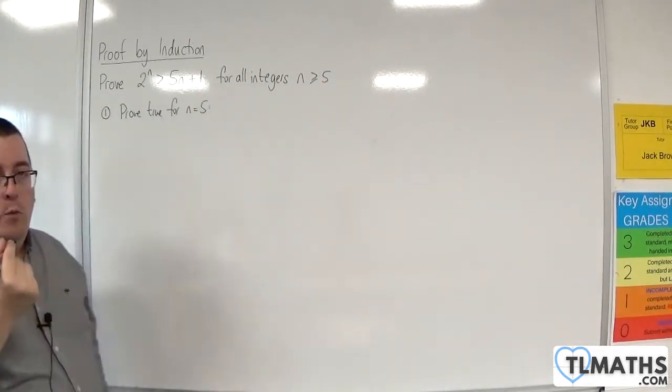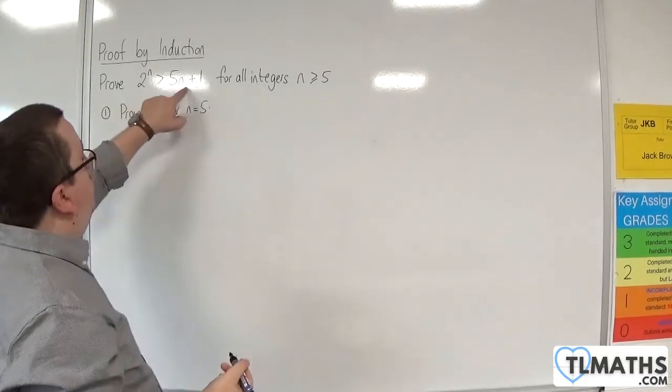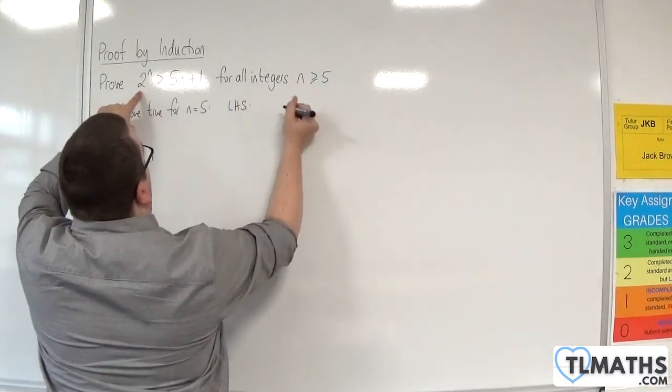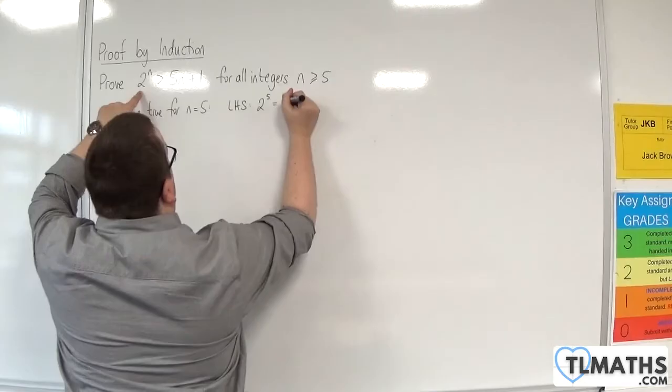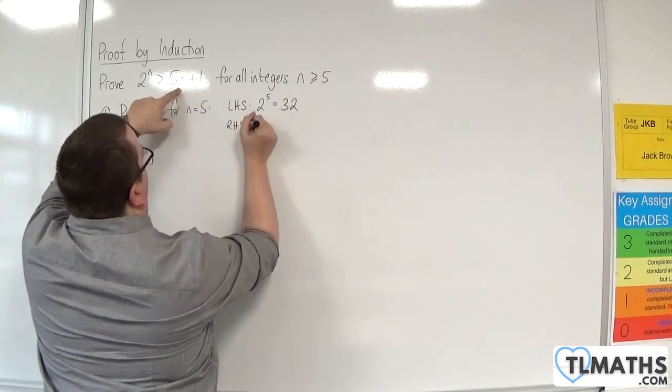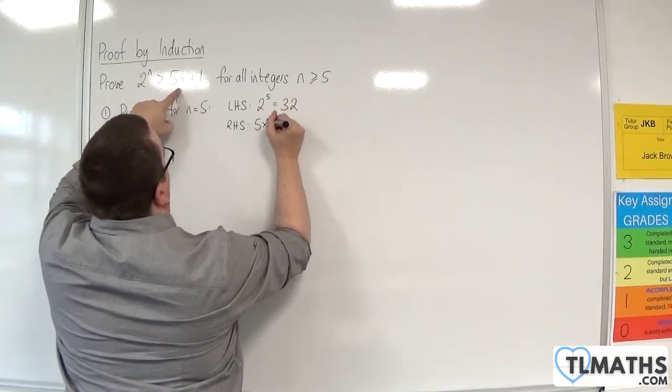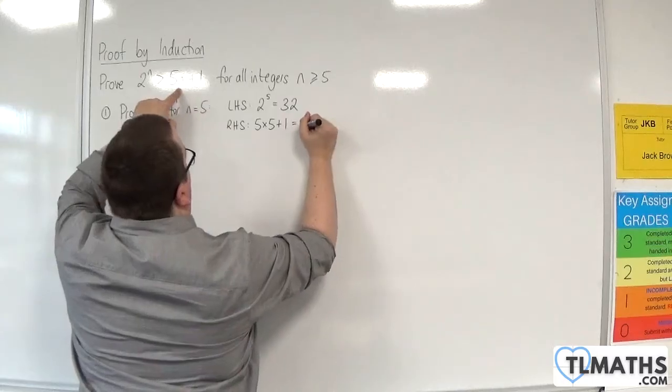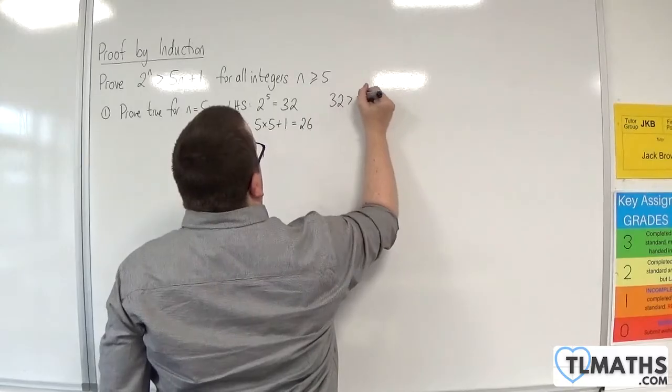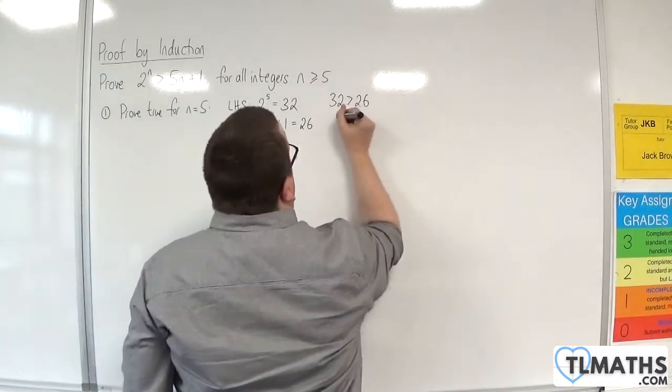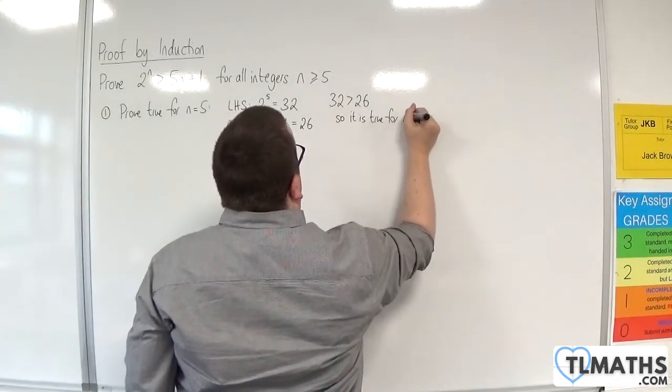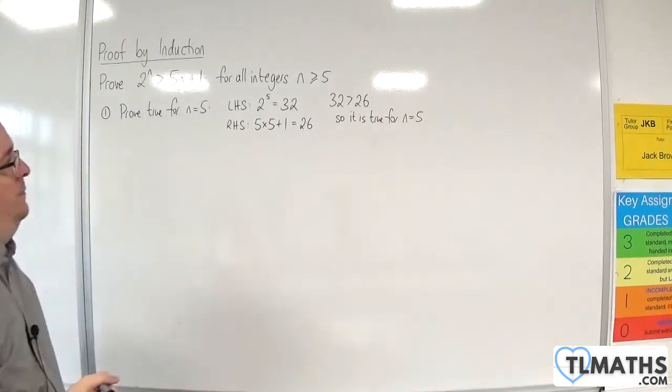And in order to do that with an inequality, we're going to look at the left-hand side and the right-hand side independently. So the left-hand side will be 2 to the power of 5, which is 32. And the right-hand side will be 5 lots of 5 plus 1, which is 26. So 32 is greater than 26. So it is true for n equals 5.